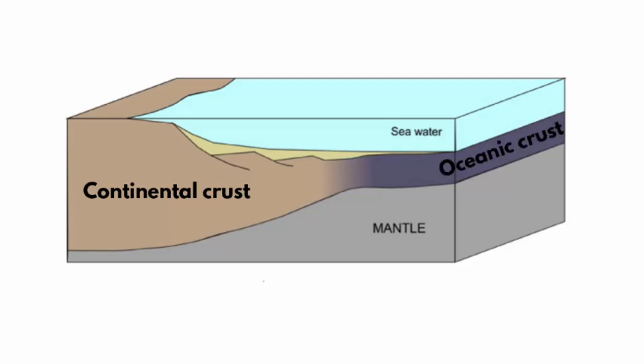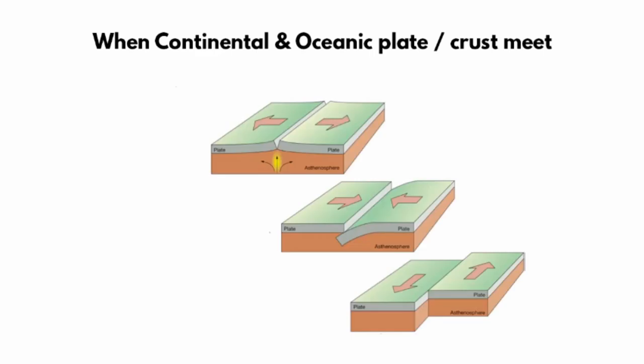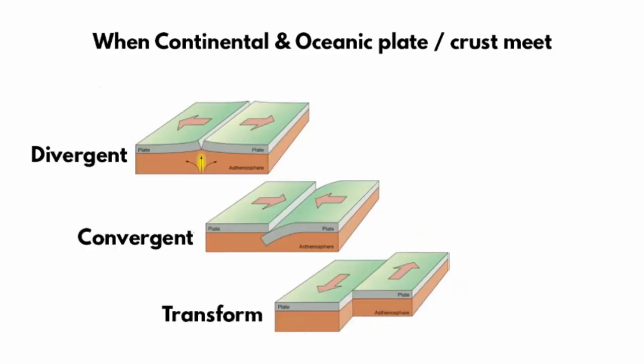These two tectonic plates form three types of boundaries: convergent, divergent, and transform. When two continental plates collide — meaning when they come in contact — it is called a convergent boundary.